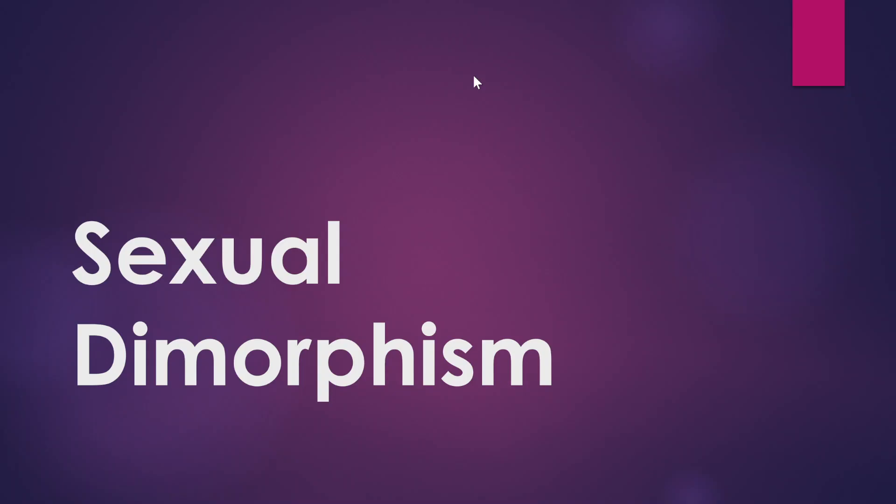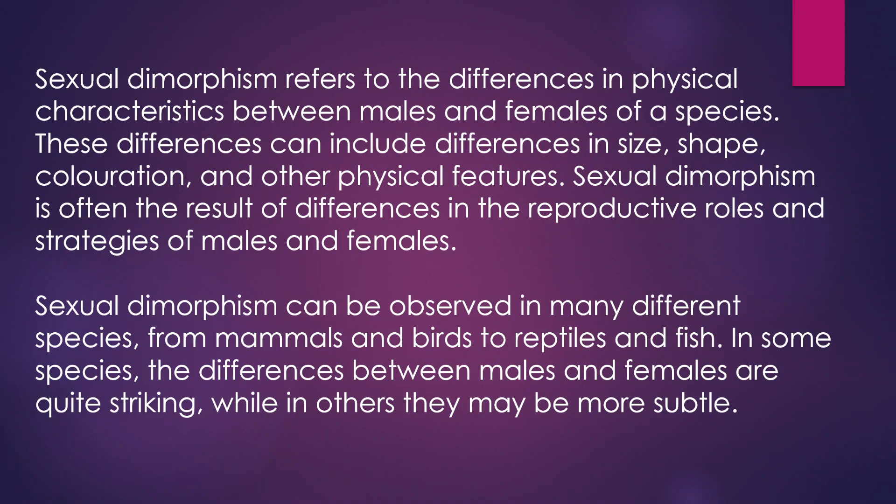Welcome back to my YouTube channel. Today in this video we will discuss sexual dimorphism. Sexual dimorphism refers to the differences in physical characteristics between males and females of a species. These differences can include differences in size, shape, coloration, and other physical features. Sexual dimorphism is often the result of differences in the reproductive roles and strategies of males and females.